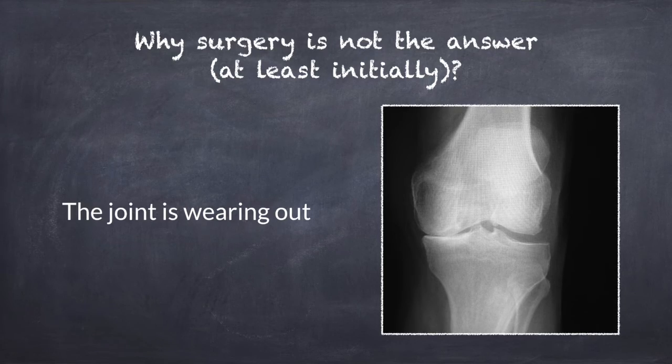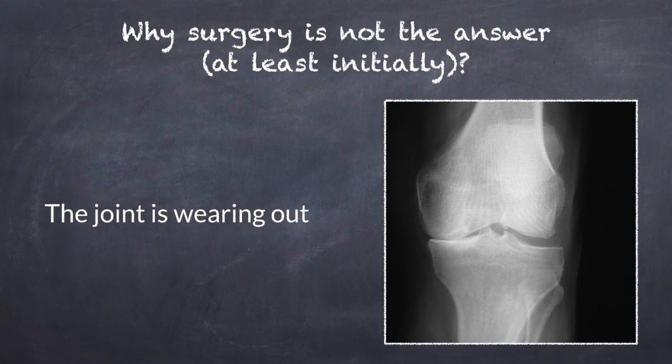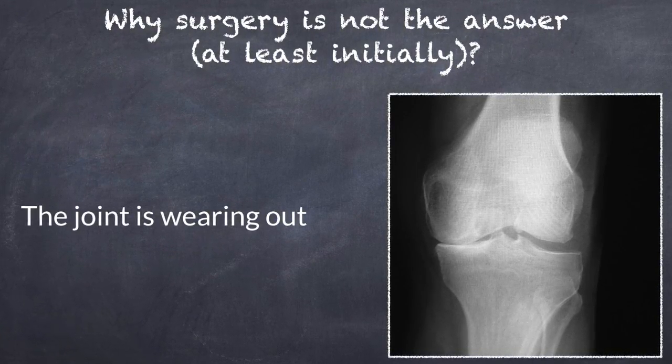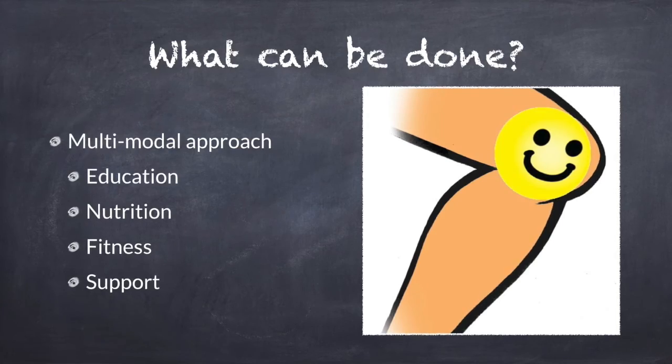So why is surgery not always the answer? I've been telling my patients this for a while — you can't, at this time, put back what's been lost. We don't know how to regrow cartilage to any large degree, or to really regrow meniscus or ligaments or tendons. And when you go in and do arthroscopic surgery, what we know is it really doesn't help any better than non-operative measures — that's been shown in numerous studies. So I usually urge people to use surgery as a last resort, because there's a lot that can be done ahead of time to improve the way you feel without surgery.